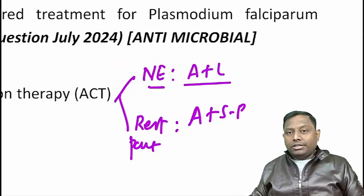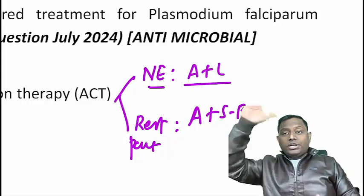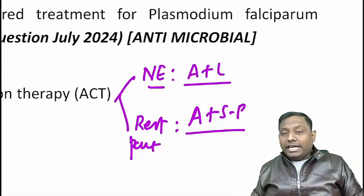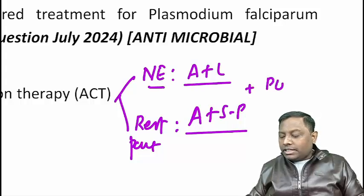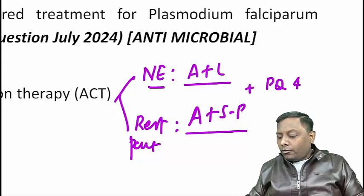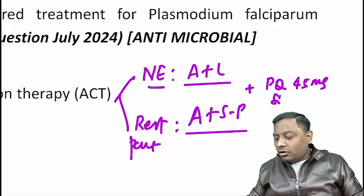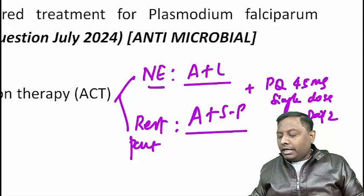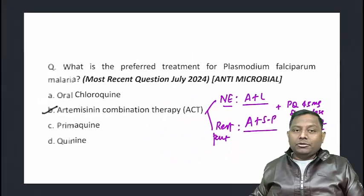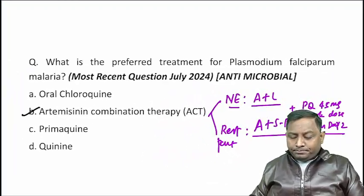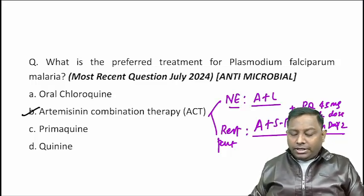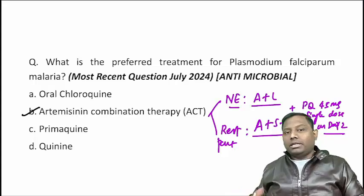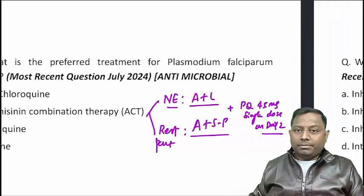To remember: artemether-lumefantrine for North East state, and ASP (three drugs) for the rest of India. In any circumstance, you can always add primaquine 45 mg as a single dose on day two as add-on therapy because of its gametocidal property. Primaquine is not the most preferred primary drug; the best drugs are the artemisinin-based combination therapies.